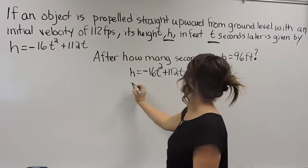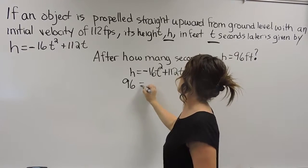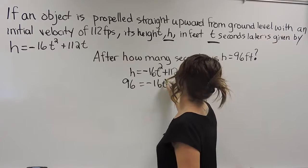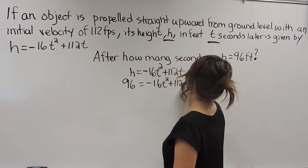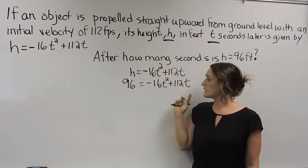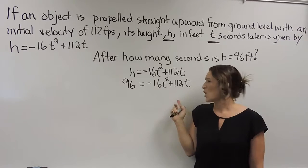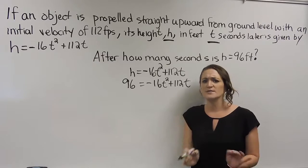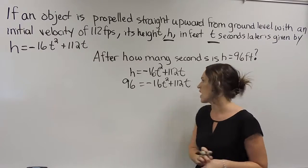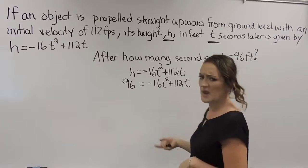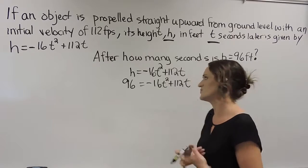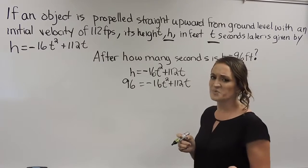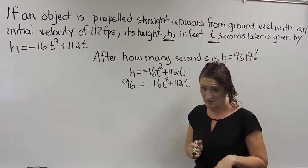So we got that h is 96 feet. So I'm going to plug that into this problem right over here. Now, I don't know about you, but if I have to solve for t here, well, I see that I have more than one t here. So obviously our steps of solving an equation is not going to work. I can't like subtract 112t from both sides or do something like that. There's no possible way I'm going to get t by itself because, hey, I got two of them here.